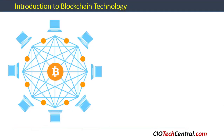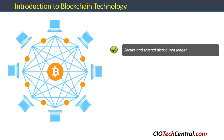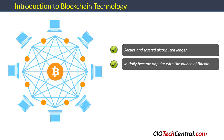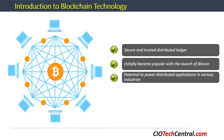Blockchain is a software-based technology that provides a secure and trusted ledger over the internet, enabling a number of sophisticated applications related to transacting assets and value. Blockchain initially became popular with the launch of Bitcoin, which is one of the most widely used cryptocurrencies.